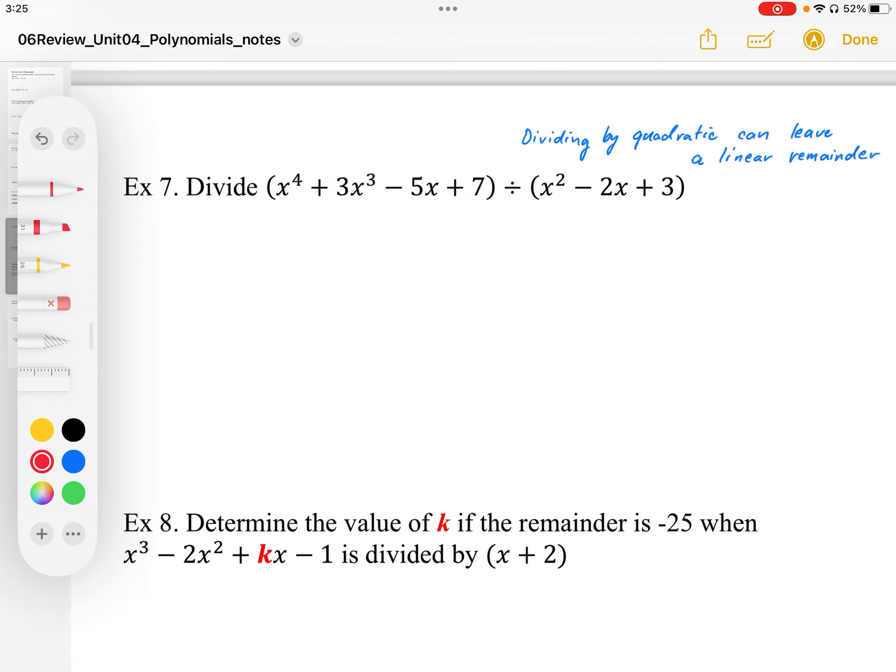So because we are dividing a 4th degree by a degree 2, we could do this either by factoring and using our synthetic division twice, but that relies on a remainder of 0. So it's going to be easier to do this one using long division, and not only easier, but more reliable.